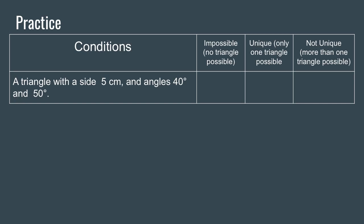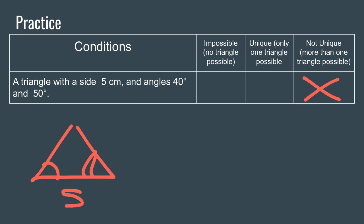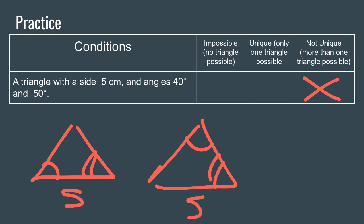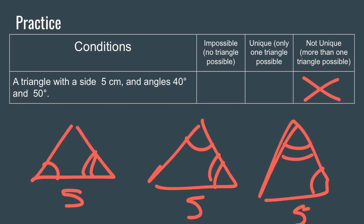Let's practice. A triangle with a side of five centimeters and angles of 40 and 50 degrees — not given a specific arrangement — results in more than one possible triangle. You could have the 40 and 50 with the 5 in between, or the 5 opposite the 40, or the 5 opposite the 50. That gives us three possibilities.